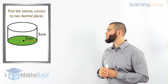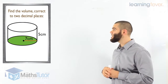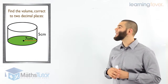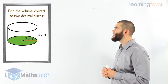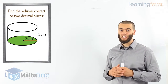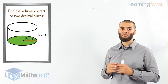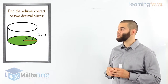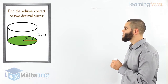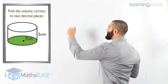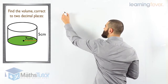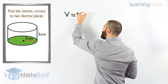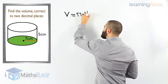In this example we have a cylinder, and we are told that the radius is 7 and the height is 5 centimetres. We are asked to find the volume correct to two decimal places. When we are working out volume, always, just like area, we write our formula: V equals pi r squared h.